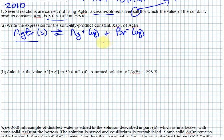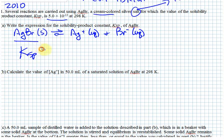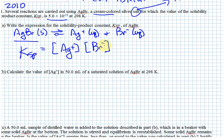Since they're ionic compounds, they dissociate into their corresponding ions. Silver bromide solid is in equilibrium with silver ion and bromide ion. The rate of the forward reaction — the dissolving of silver bromide to form ions — equals the rate that the ions reform silver bromide. The Ksp expression is just the concentration of silver ion times the concentration of bromide ion. Solids do not appear in the equilibrium expression.